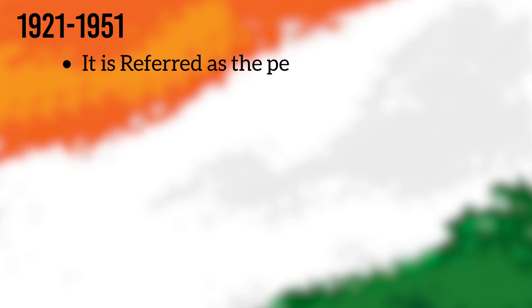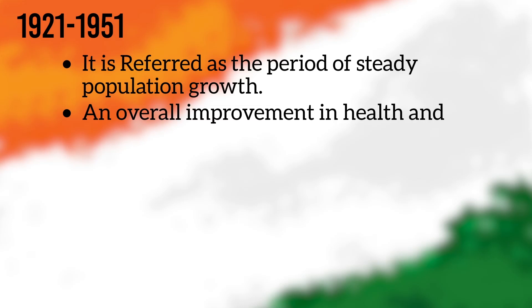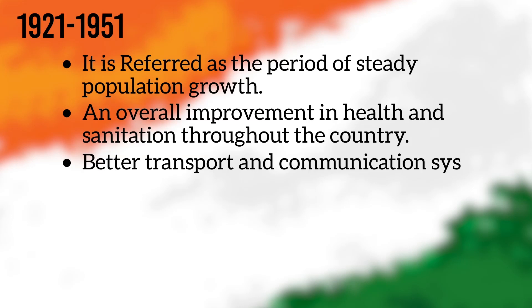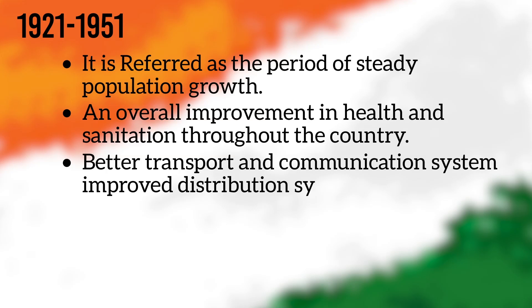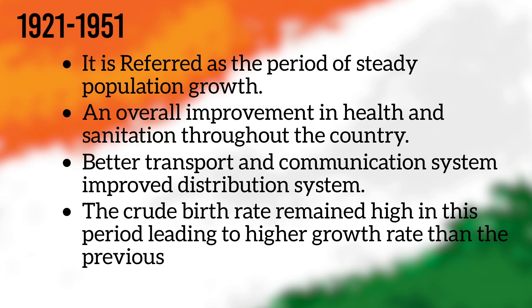Between 1921 and 1951, the period is referred to as the period of steady population growth. An overall improvement in health and sanitation throughout the country took place. Better transport and communication systems improved the distribution system. The crude birth rate remained high in this period, leading to a higher growth rate than the previous phase.